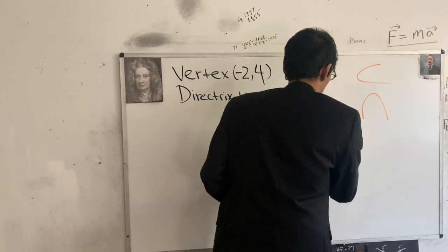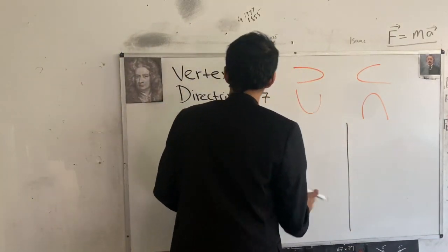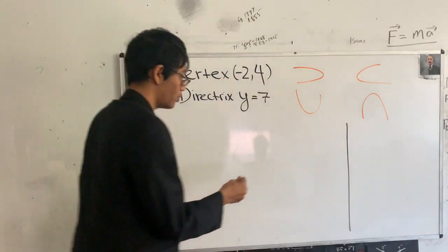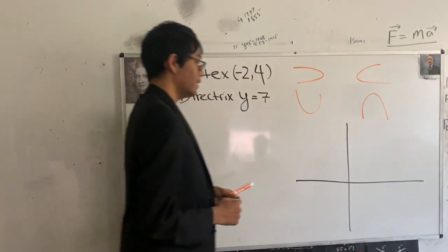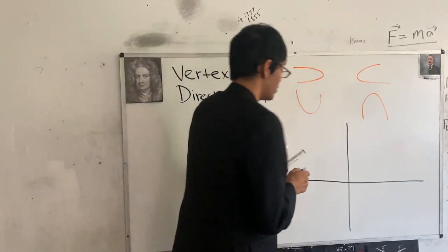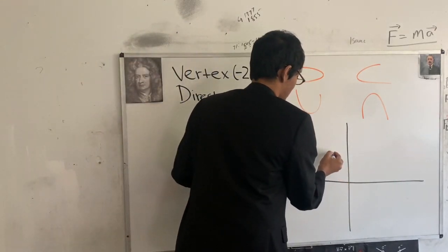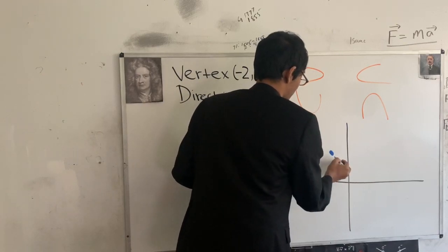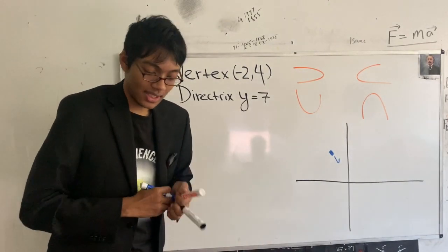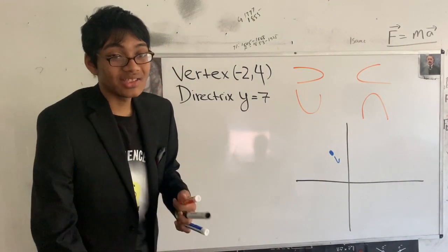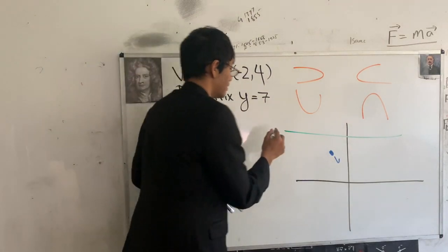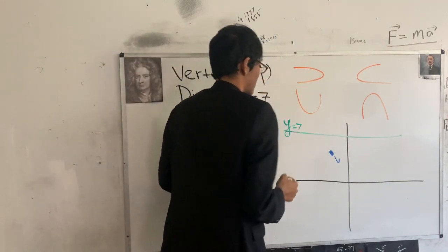To answer that question, we go back to the coordinate plane. The vertex at (−2, 4) is plotted, and the directrix y = 7 is a horizontal line above that blue point. So in blue we have the vertex of our parabola at (−2, 4), and the directrix is drawn above it.